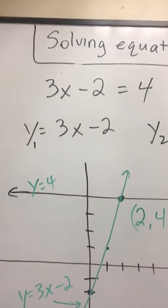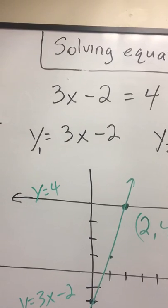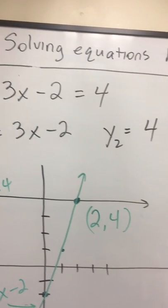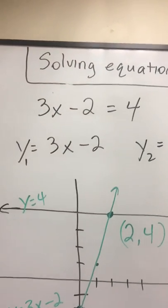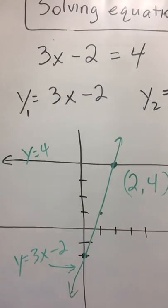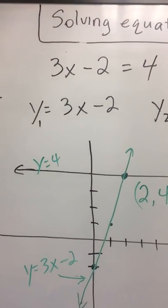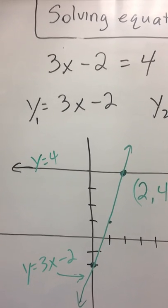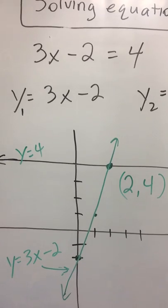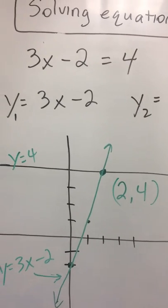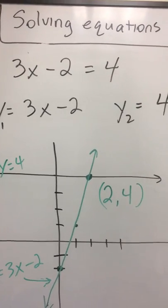Notice how I've stated y1 = 3x - 2, and y2 = 4. I then went ahead and graphed them by hand. So the y2, the y = 4. When it's y equals a number, it's always a horizontal line going through that point on the y-axis, so it's going through at 4.